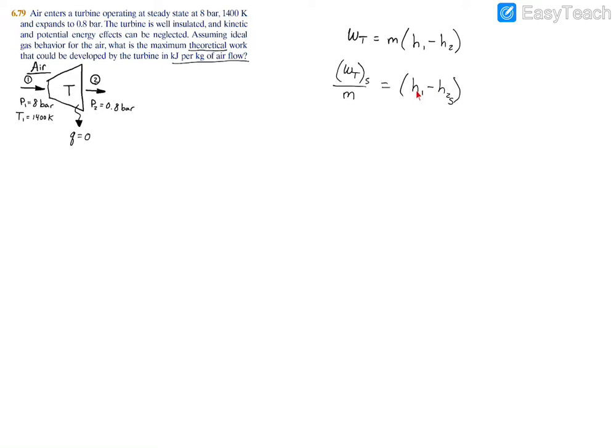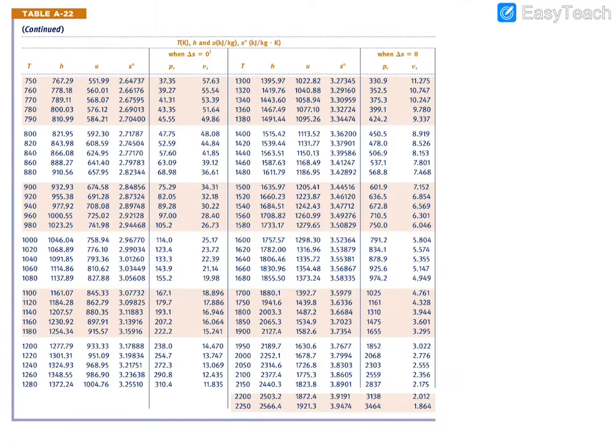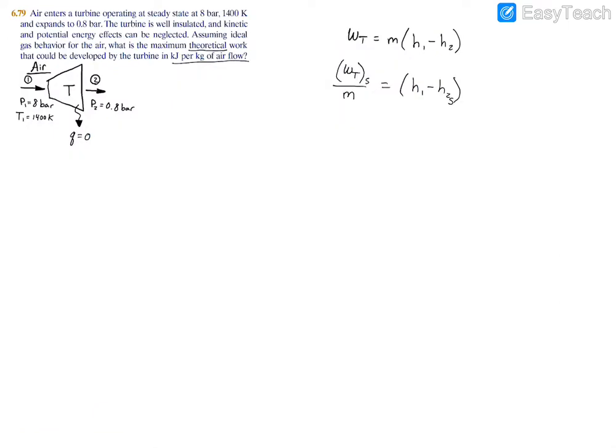And we can find this inlet enthalpy pretty easily. We're given 1400 Kelvin, so we just go to our properties table and we turn to Table A22. We go to 1400 Kelvin right over here and you have the entropy is 1515.42. So let me fill that out: 1515.42, and that's kilojoules per kilogram which is the unit you're looking for, which is nice, minus - and then we don't have that exit entropy, sorry enthalpy yet.